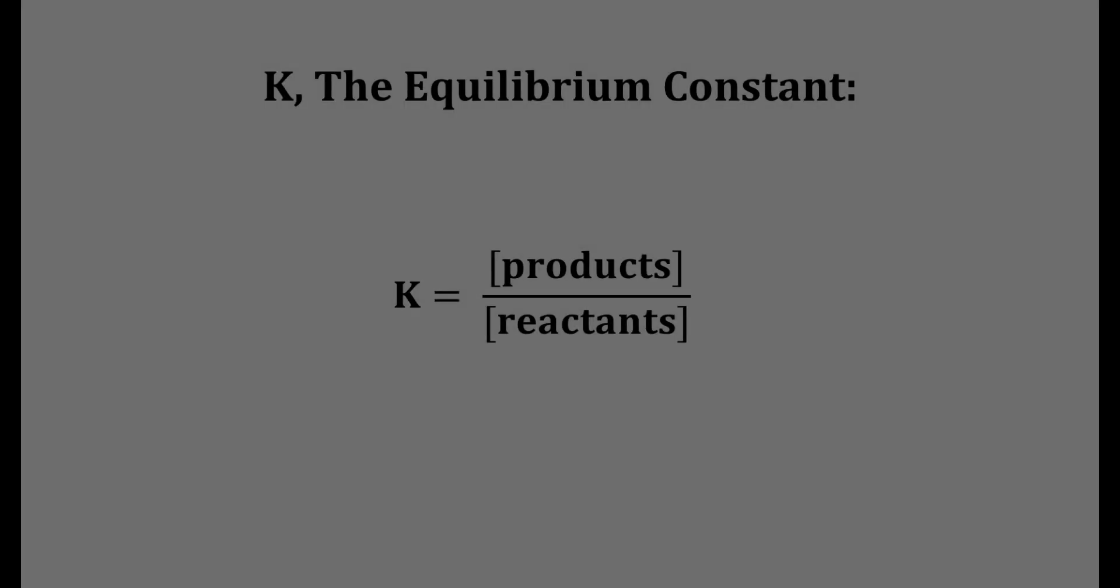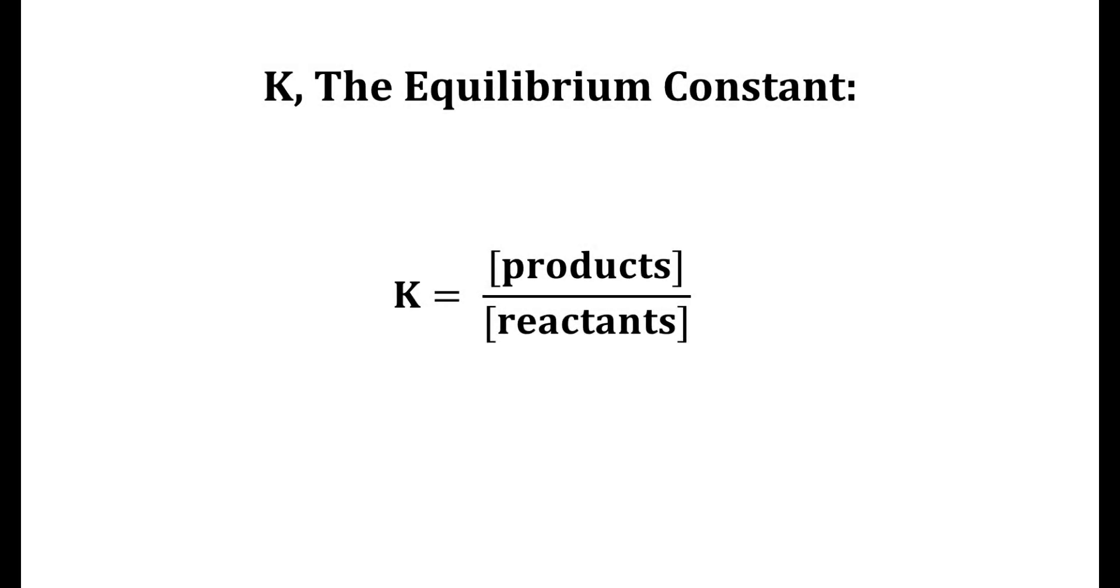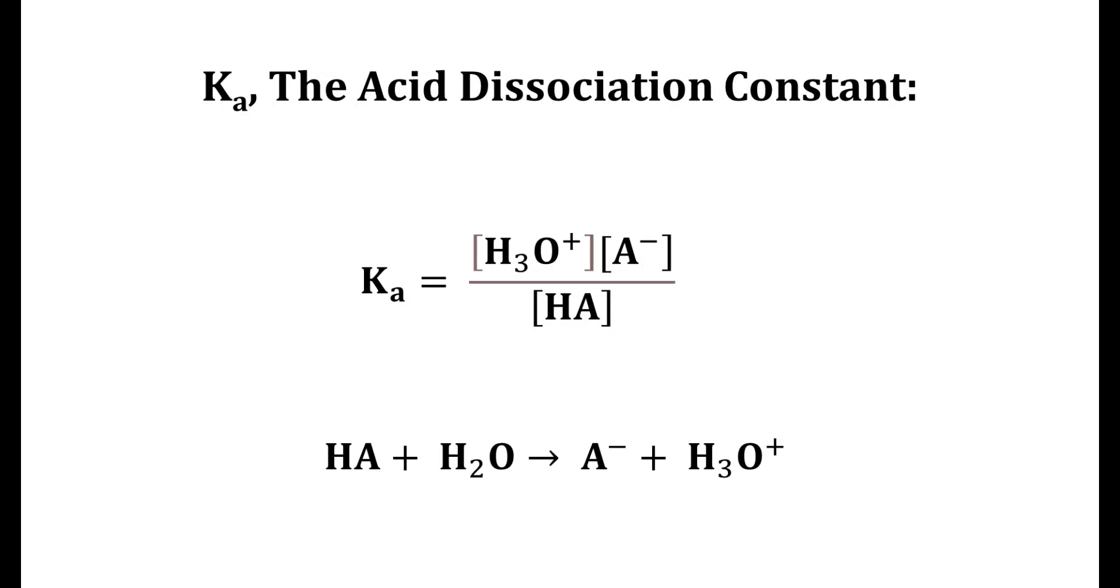You might remember K, the equilibrium constant, as shown here. A similar constant exists for acid strength. Ka is the acid dissociation constant, and it quantifies the strength of an acid solution. The stronger an acid, the larger its Ka value.